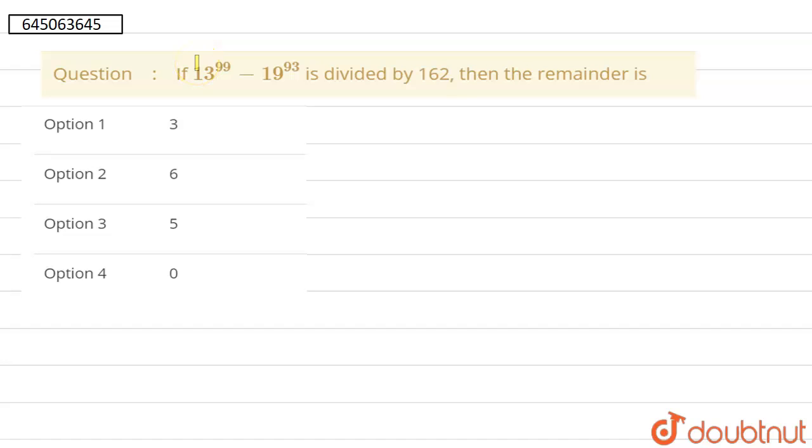So hello everyone. In this question they said if 13 power 99 minus 19 power 63 is divided by 162, then the remainder is 3, 6, 5, or 0. There are four options. So we know that odd minus odd is even, so we have to remember this is important for this.